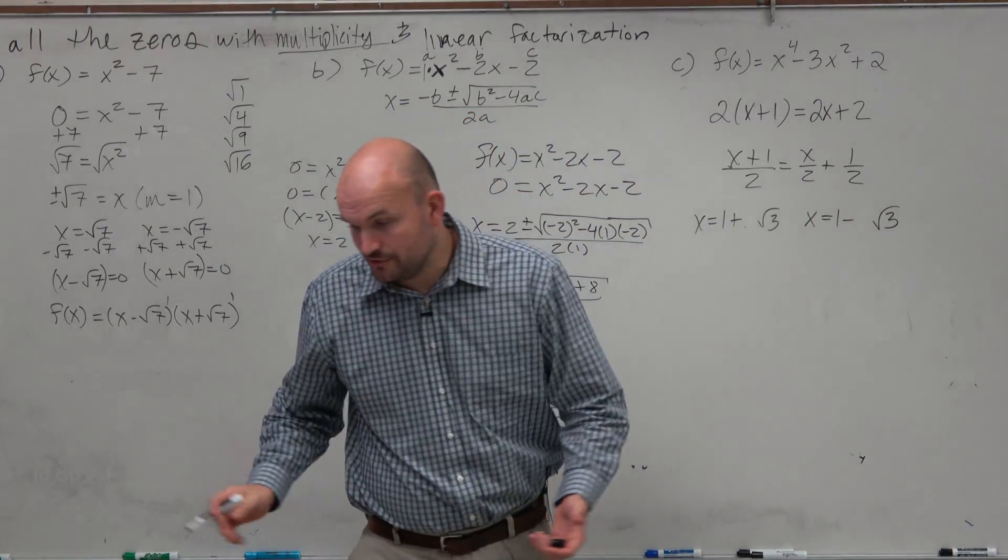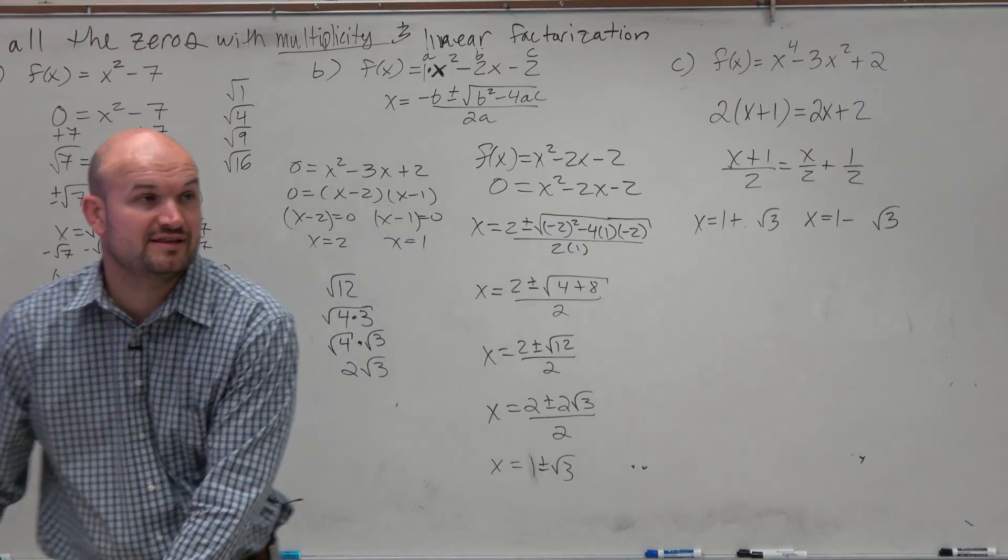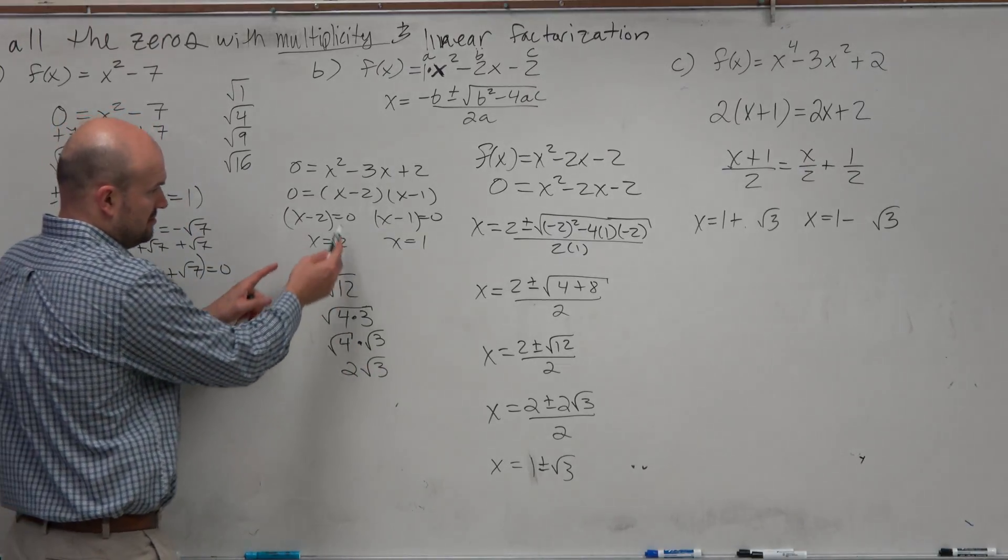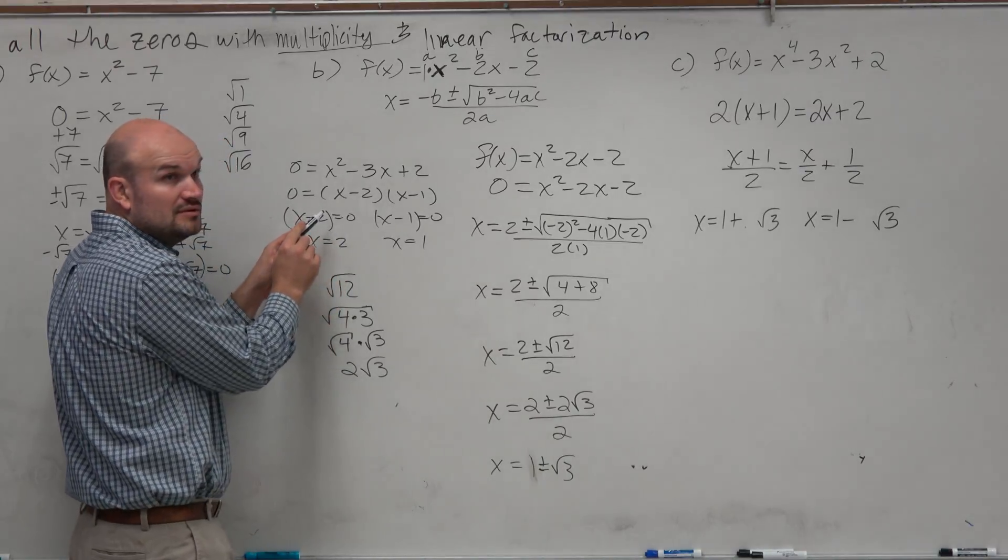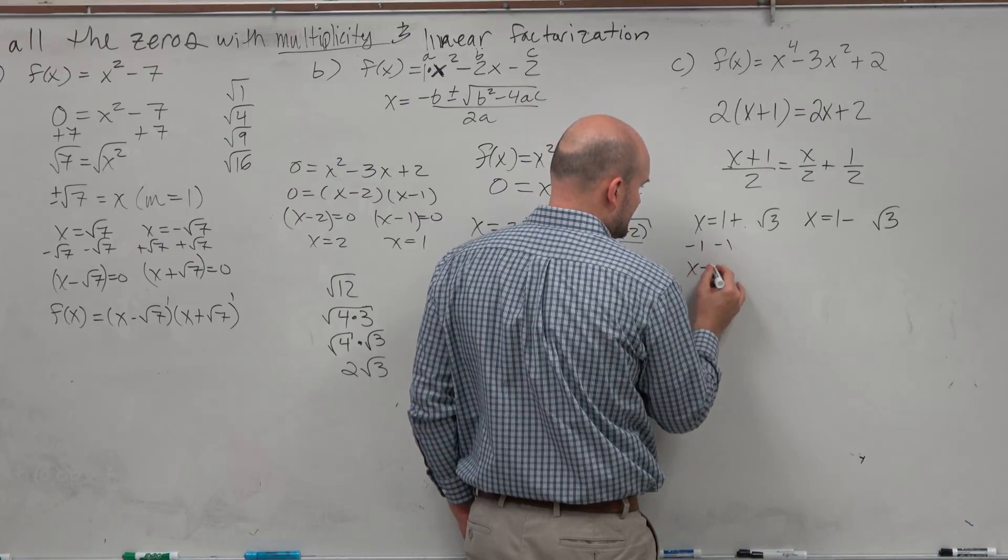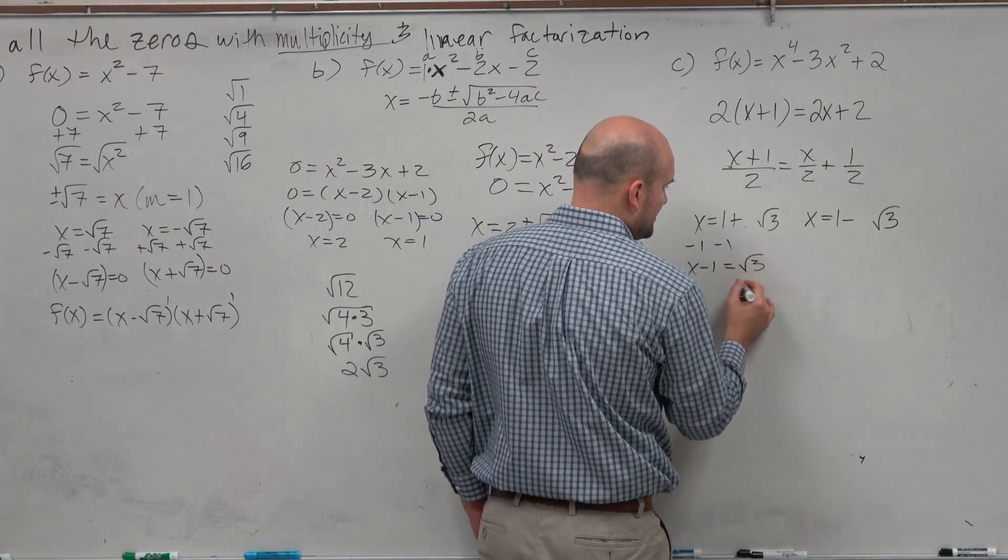So again, let's go back through the issue. When we have the zeros and we want to find the factors, what are we doing? Setting the zeros equal to 0. So basically I'll just do one. Hopefully you guys will get the pattern and then you guys can just do it on your own.